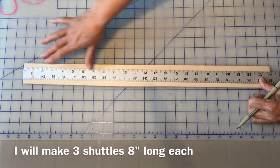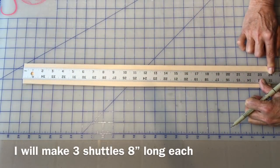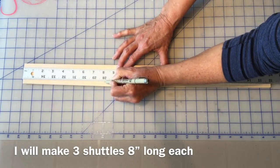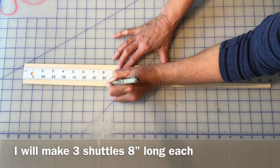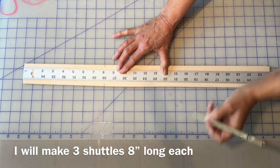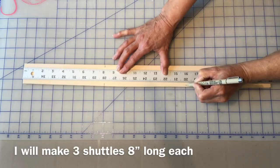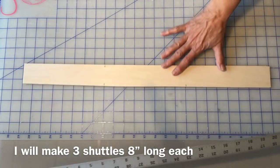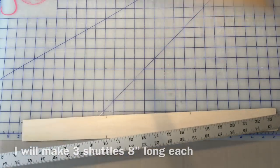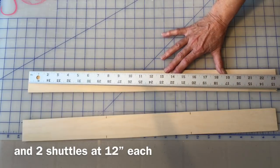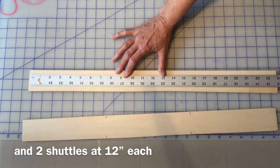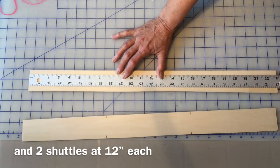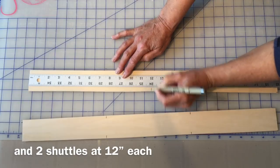And being that this piece of basswood is 24 inches long, that means I can get three shuttles at eight inches long each. So I'll make a mark at eight inches and a mark at 16. And that will give me three shuttles on this piece. And on this one let's make two longer shuttles. So this time I will make two at 12 inches.